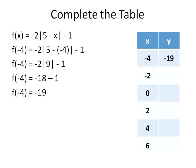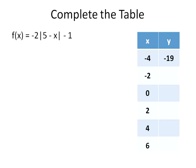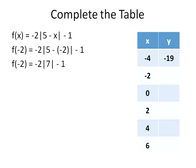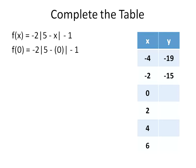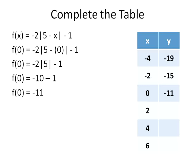Notice the function output is our y value — we can also list it as f(x) in the table header; both mean the same thing. When graphing, you use x and y. Moving on: f(-2) — substituting negative 2, we get 5 minus negative 2, which is 5 plus 2, giving positive 7. Negative 2 times positive 7 is negative 14, minus 1 is negative 15. For f(0): 5 minus 0 is 5; negative 2 times positive 5 is negative 10, minus 1 is negative 11.